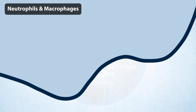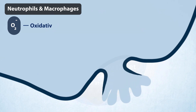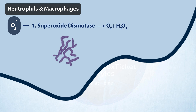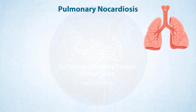Another immune system weapon is that neutrophils and macrophages attack invading bacteria by producing a large number of harmful oxygen radicals, such as superoxide, as a result of an oxidative metabolic burst. However, Nocardia produces two enzymes that deactivate these dangerous oxygen radicals. First, there's superoxide dismutase, which converts superoxide radicals to oxygen and hydrogen peroxide. Because hydrogen peroxide is still toxic, Nocardia also produces catalase, which converts hydrogen peroxide into water.